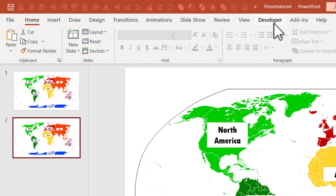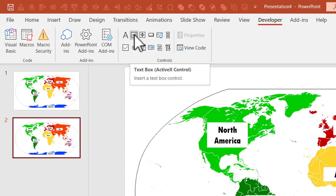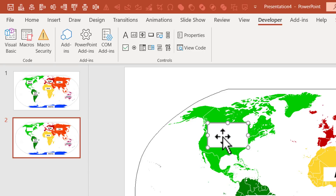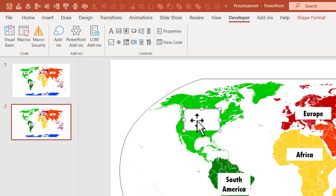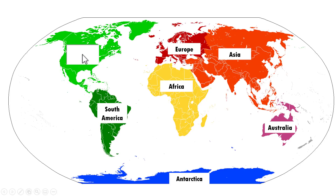Now we have a new developer tab. Click on it, and in the Controls group, use the second option called Text Box. Click on the text box option, then use your cursor to create a text box that has the same size as the existing one, covering it completely. Now you can go to slideshow mode and type live inside the text box — for example, 'North America' — and the job is done.